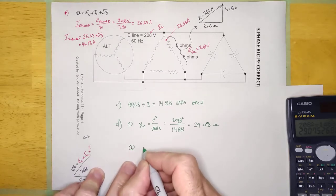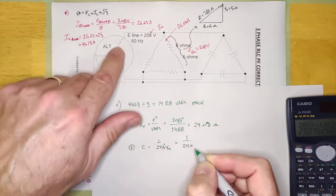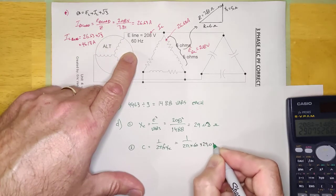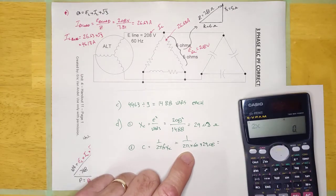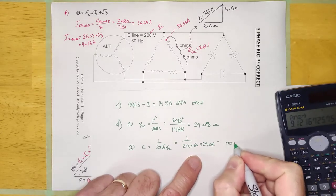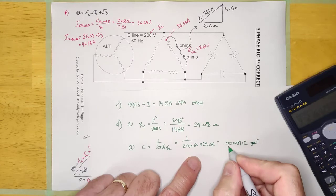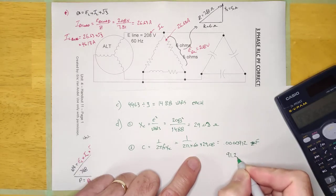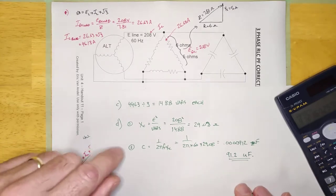Step two, guys. C is equal to 1 over 2 pi F XC. 1 over 2 times pi times 60 times 29.08. This is 0.0000912 farads, which is 91.2 microfarads. And that is the correct answer. So it looks like I've been doing it correct all along.